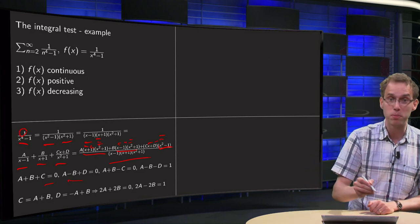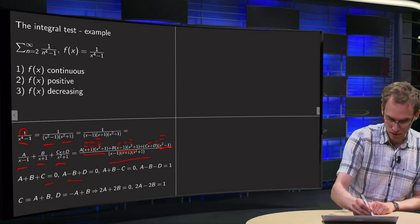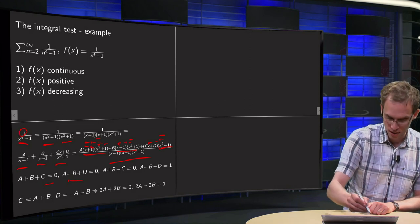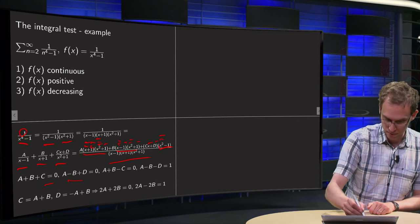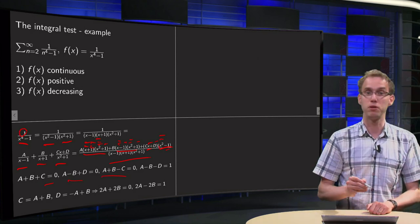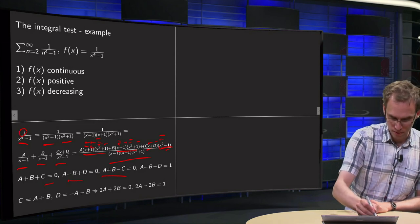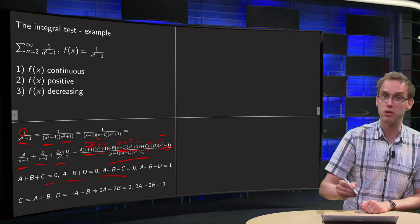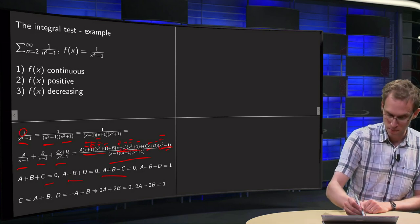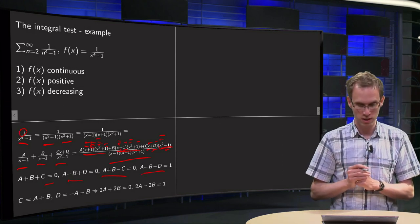Investigating the x terms: we have A plus B minus C, so A + B - C = 0. Then looking at the constant terms: we have A minus B minus D, so A - B - D = 1.